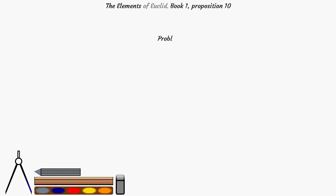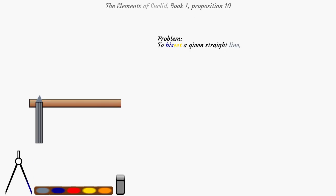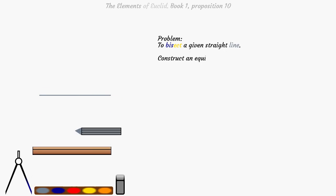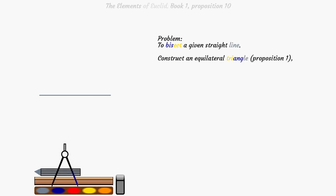Problem: to bisect a given straight line. Construct an equilateral triangle, Proposition 1.